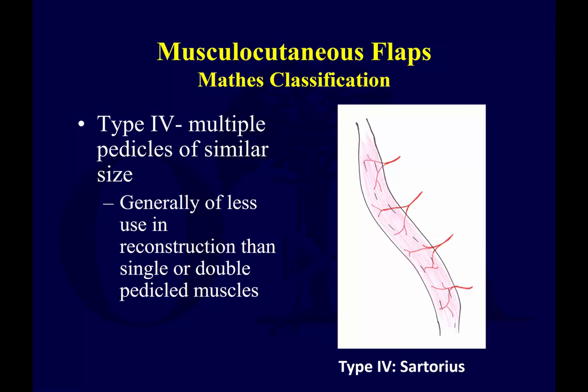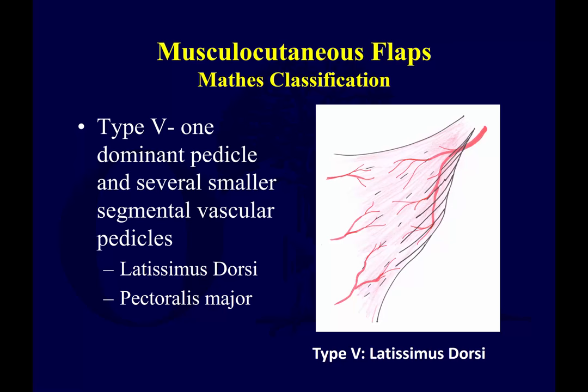Type 4 muscles are generally not used for soft tissue reconstruction because they lack a distinct pedicle and can't be rotated reliably on multiple small perforating branches. Type 5 flaps have a dominant pedicle allowing elevation as a free flap or rotation flap. Since there is a segmental blood supply to the muscle at the distal end, half of the muscle can be harvested on the dominant pedicle while the remainder is nourished from the segmental vascular pedicle. The latissimus is a workhorse muscle flap for soft tissue coverage and is an example of a type 5 muscle.